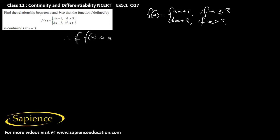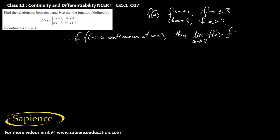If the function f(x) is continuous at x = 3, then it means we should have that the limit as x tends to 3 of f(x) should be equal to f(3).